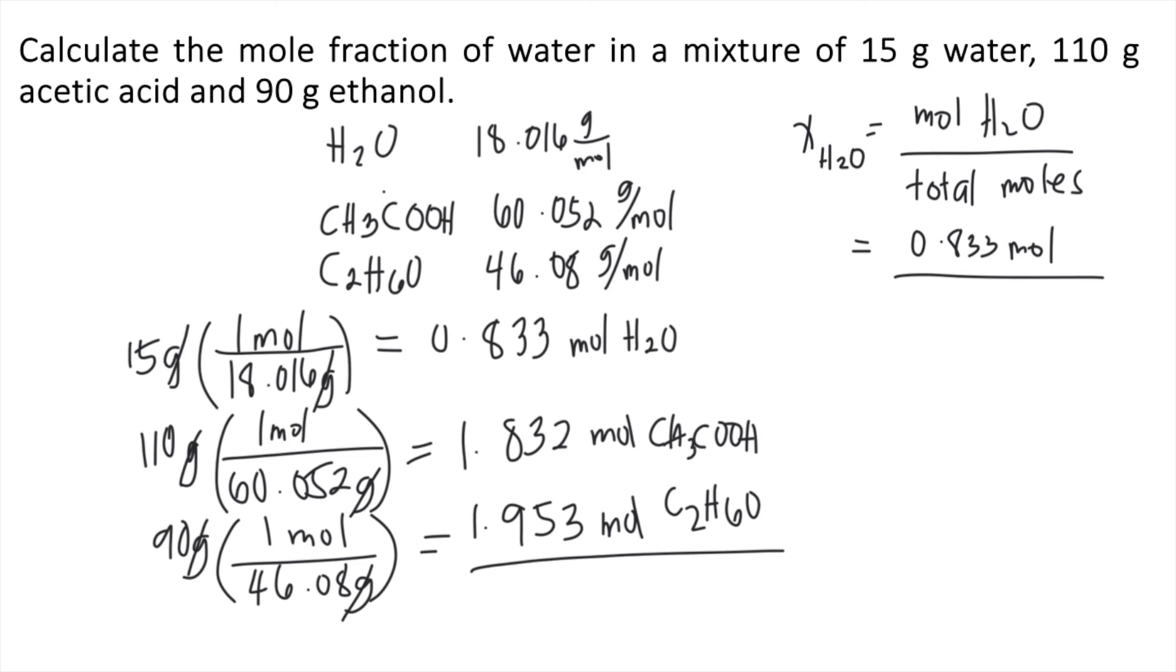Then you plug that into the formula, divided by 4.618 moles. The moles will cancel, and the mole fraction is 0.833 divided by 4.618, and this will give you 0.180. Mole fraction has no unit because the moles cancel out. So the answer is 0.180.